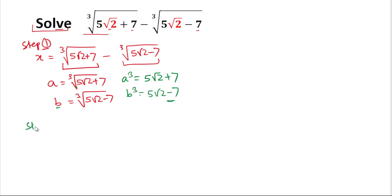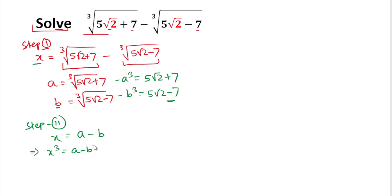In Step 2, the value of x is a minus b, so we write x = a − b. Now we'll cube both sides: x³ = (a − b)³. The formula for (a − b)³ in terms of a³ and b³ is: a³ − b³ − 3ab(a − b).